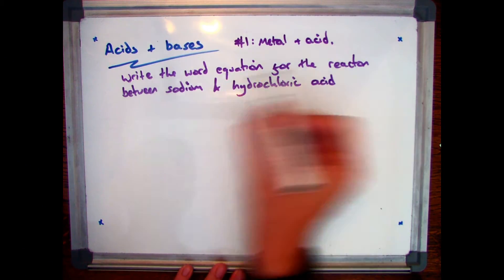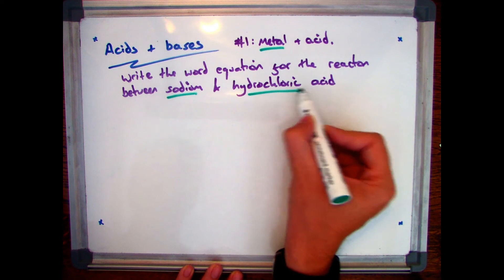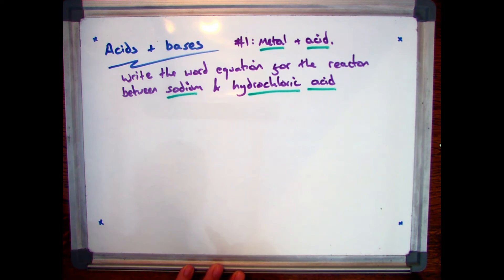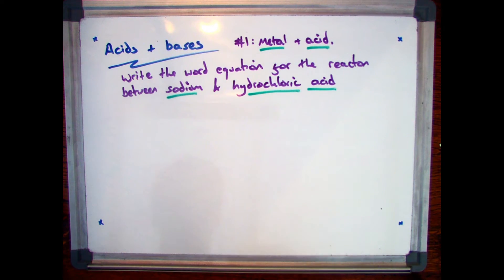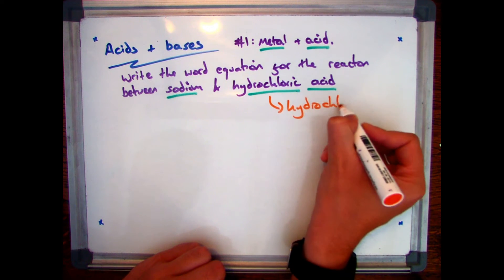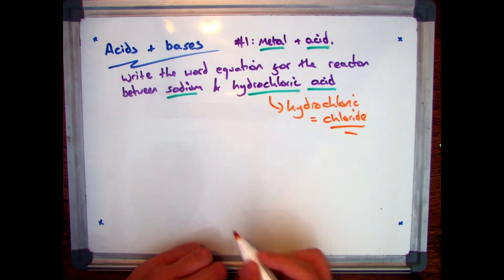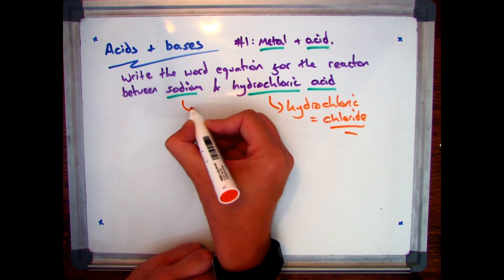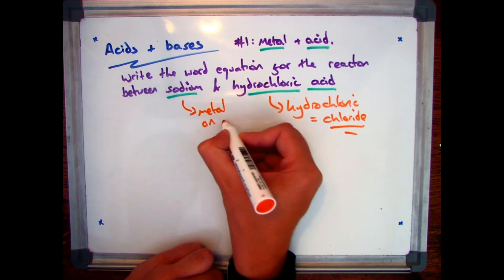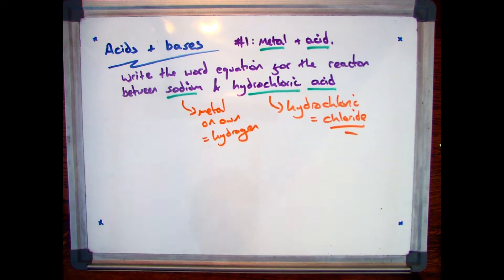We're going to start off with metals reacting with acids. So here we have sodium, which is our metal, reacting with hydrochloric acid, which is our acid, and you're asked to write the word equation for the reaction. The first key fact is that if you have hydrochloric acid, the ending of your salt will always be a chloride. The second thing to know is that if you have a metal on its own, you will get a by-product, which is hydrogen gas.